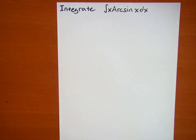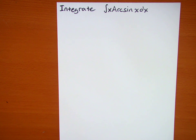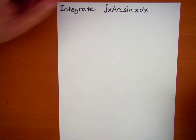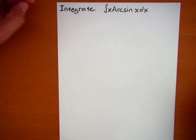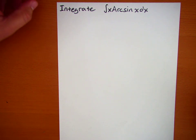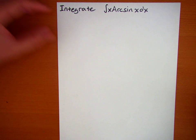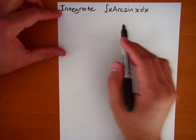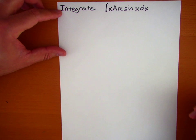We want to integrate x·arcsin(x). Before we do this, we need to start with a triangle. Whenever you see some sort of trigonometric function, whether it's sine, cosine, tangent, or even arcsine or arctangent, we want to remember that this is all part of a triangle. Arcsine of x is an angle.